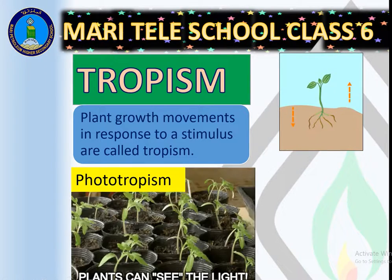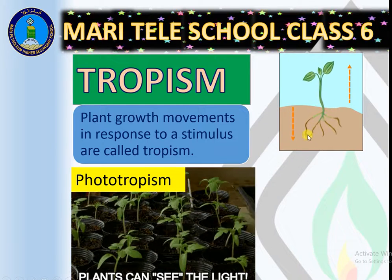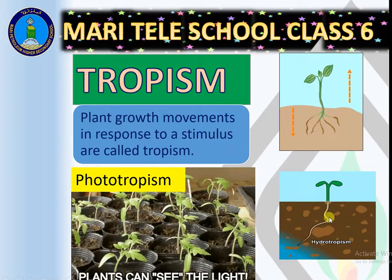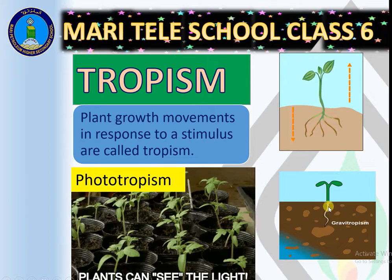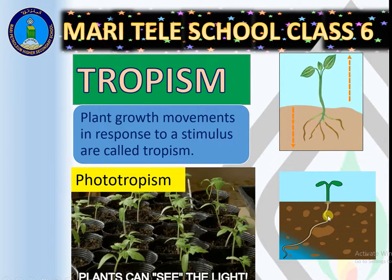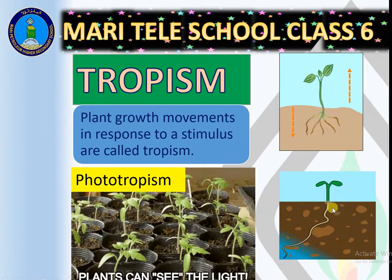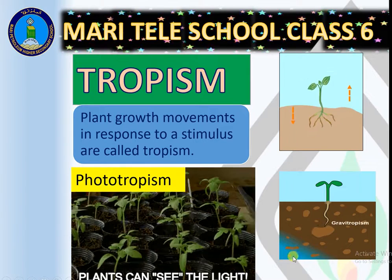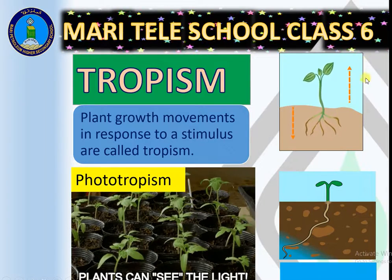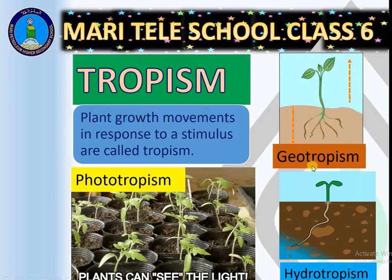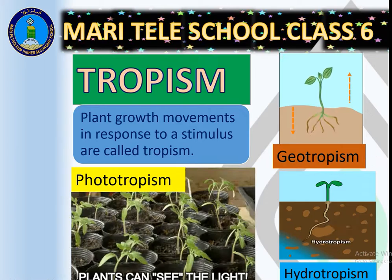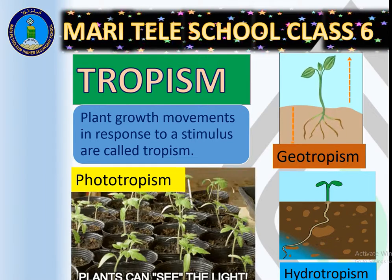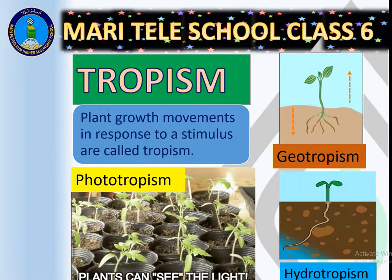So we have phototropism. In this plant the stem is growing up and the roots are going down into the soil. Some desert plants have roots that grow very long in search of water — this is called hydrotropism. When roots move under the force of gravity towards the center of the earth, that is called geotropism or gravitotropism.